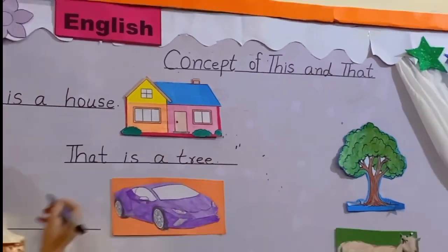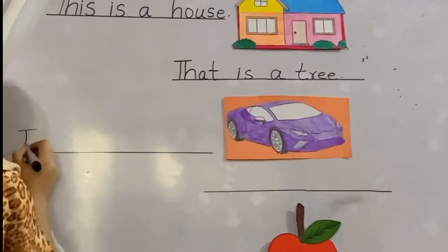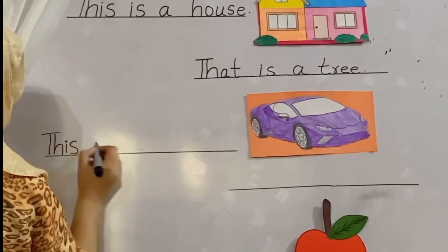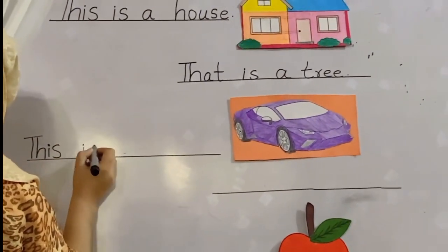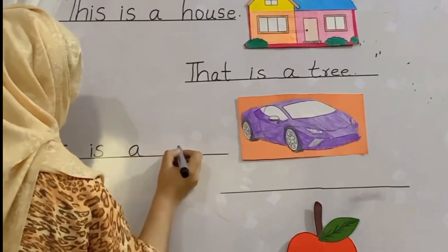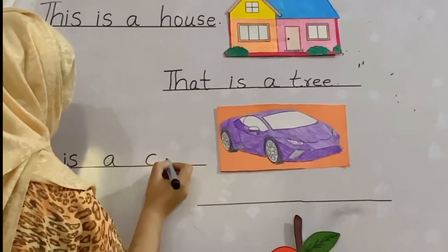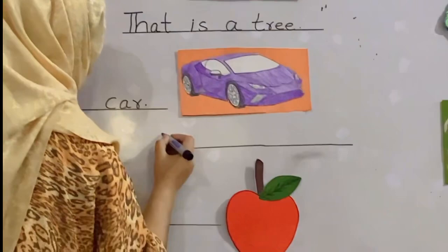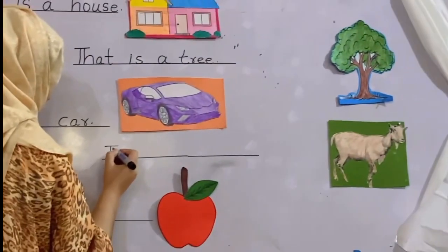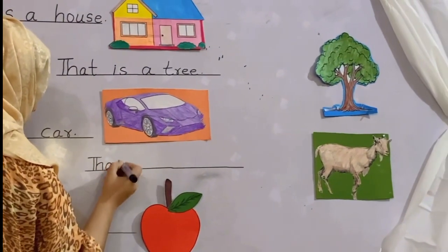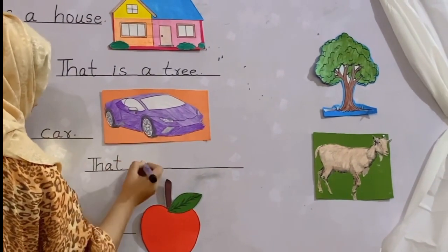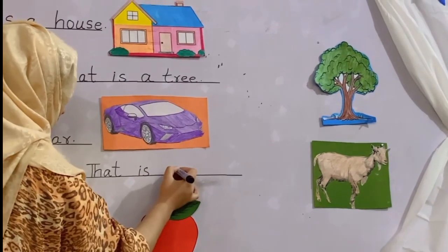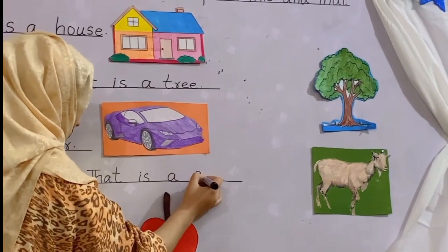Another example: this is a car. And another example: that is a goat — 'that is a goat.'